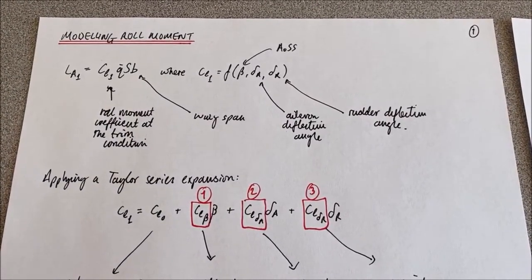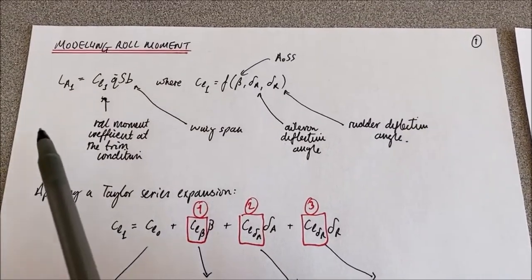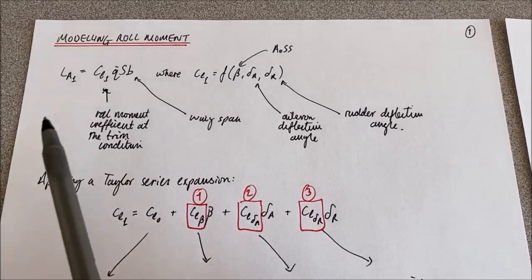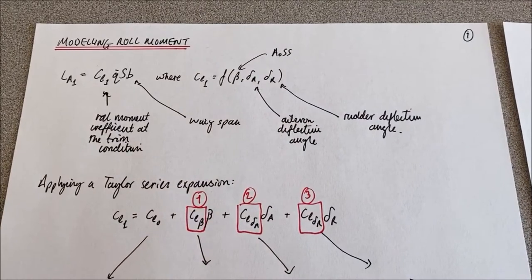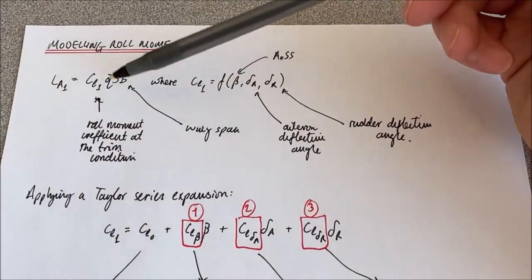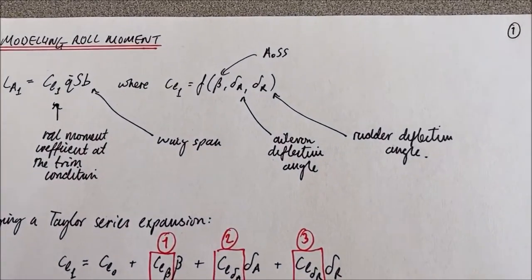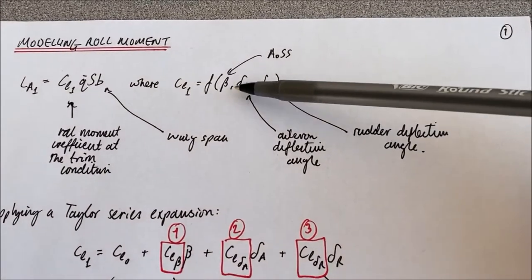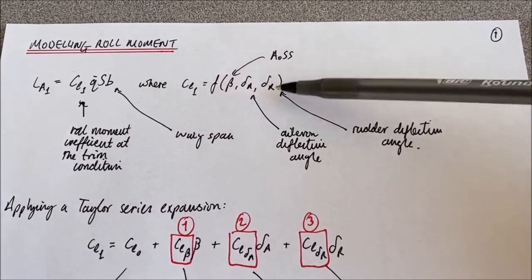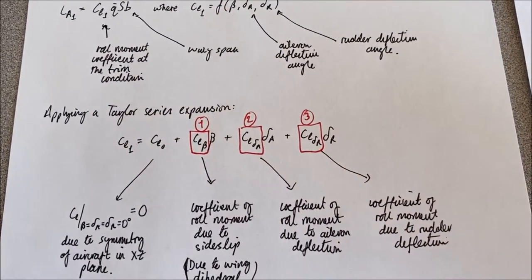Let's look at modeling the roll moment. The roll moment in the trim condition is given by L subscript 1, based on the roll moment coefficient at the trim condition, the dynamic pressure, the wing reference area, and the wingspan. The coefficient of roll moment is a function of three terms, and as always we apply a Taylor series expansion to get our expression.